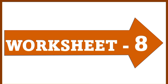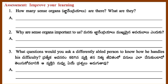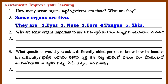Worksheet 8 — Assessment: Improve your learning. Question 1: How many sense organs are there? Answer: There are 5 sense organs — Eyes, Nose, Ears, Tongue, and Skin.